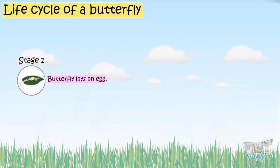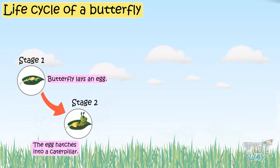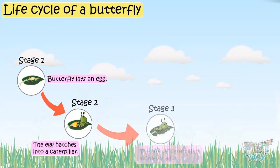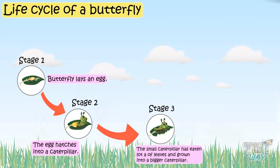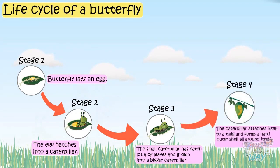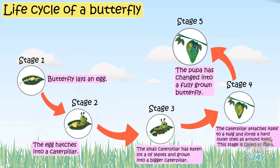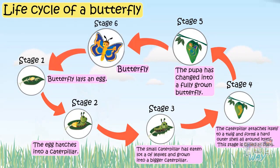Let's revise the butterfly life cycle. Stage one: the butterfly lays an egg. Stage two: the egg hatches into a small caterpillar. Stage three: the caterpillar eats a lot of leaves and grows bigger. Stage four: the caterpillar attaches to a twig and forms a hard shell — it is now called a pupa. Stage five: after time in the cocoon, the pupa changes into a fully grown butterfly. Stage six: a beautiful butterfly emerges.